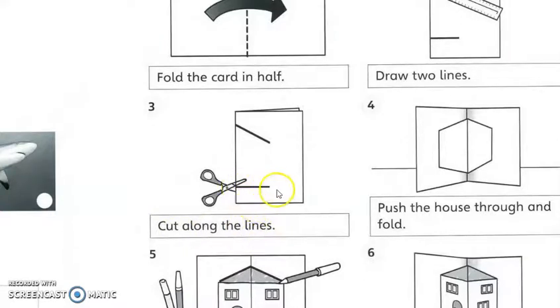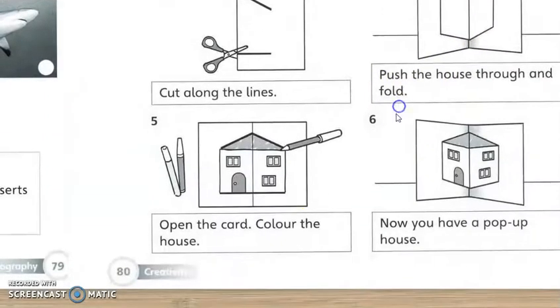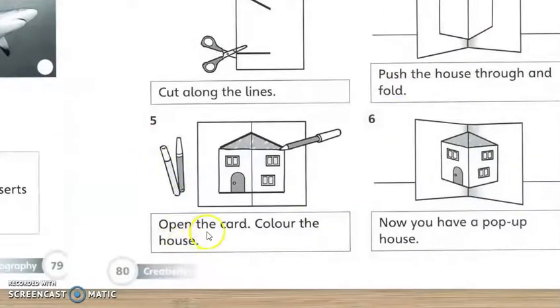Along the lines like this. Alright, then number four, push the house through and fold. Kamu tolakkan kertas tu ya, menjadi nampak menjadi bentuk seperti sebuah rumah dan lipatkan. Kemudian yang kelima, open the card.